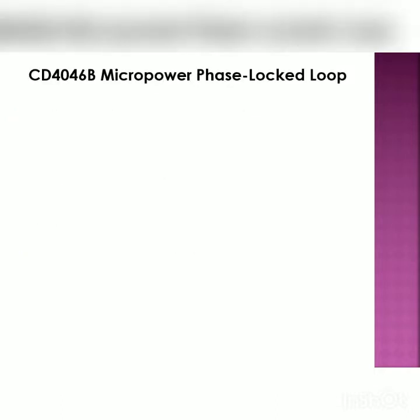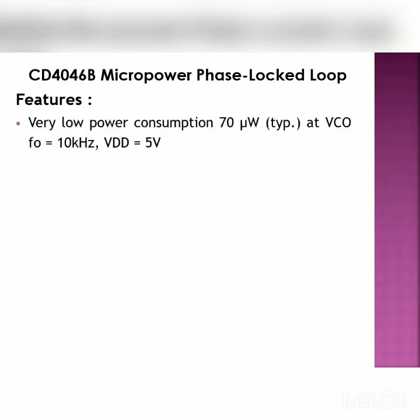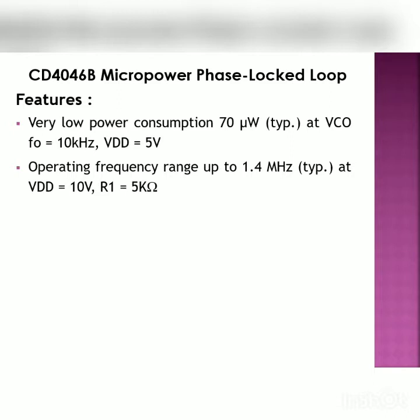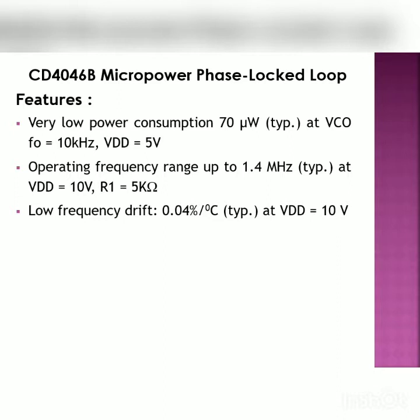The IC CD4046 is a CMOS micro power phase lock loop IC. Its features include very low power consumption — typically 70 microwatts at a VCO center frequency of 10 kHz and supply voltage of 5 volts — and an operating frequency range up to 1.4 MHz at 10 volts with R1 equal to 5 kilo ohms. Low frequency temperature coefficient is 0.4% per degree Celsius at 10 volts.